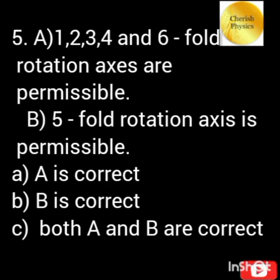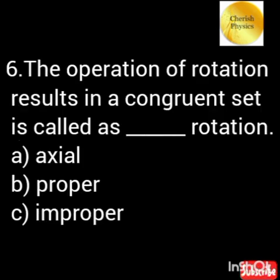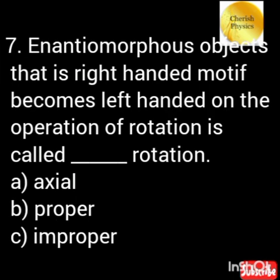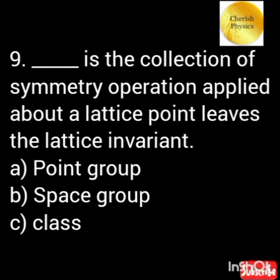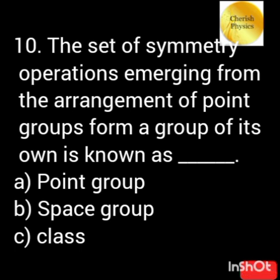The body-centered and face-centered cubic cells are non-primitive. Option A: 1, 2, 3, 4 and 6-fold rotation axes are permissible. Option B: 5-fold rotation axis is permissible. The operation of rotation that results in a congruent set is called a proper rotation. An enantiomorphous object where a right-handed motif becomes left-handed on the operation is an improper rotation. The symmetry elements that exist in a crystal are rotation, reflection, inversion, and rotation-inversion axes. The collection of symmetry operations applied about a lattice point that leaves the lattice invariant is called the point group.